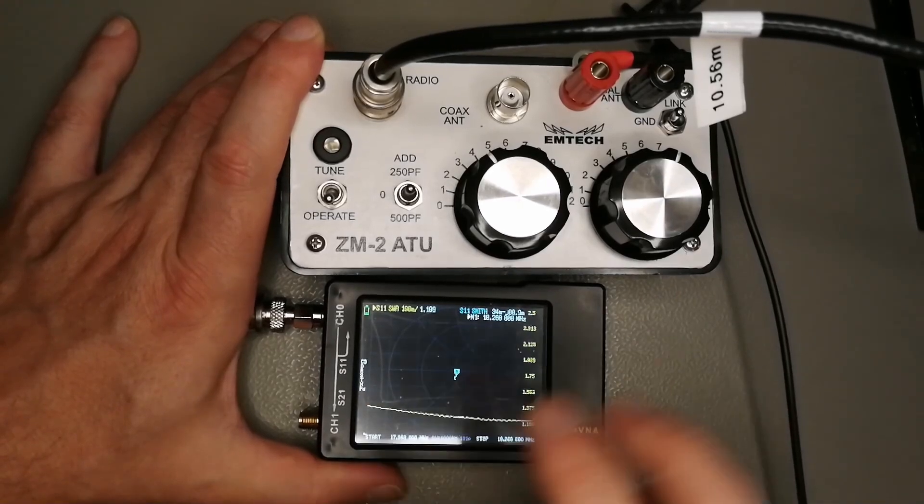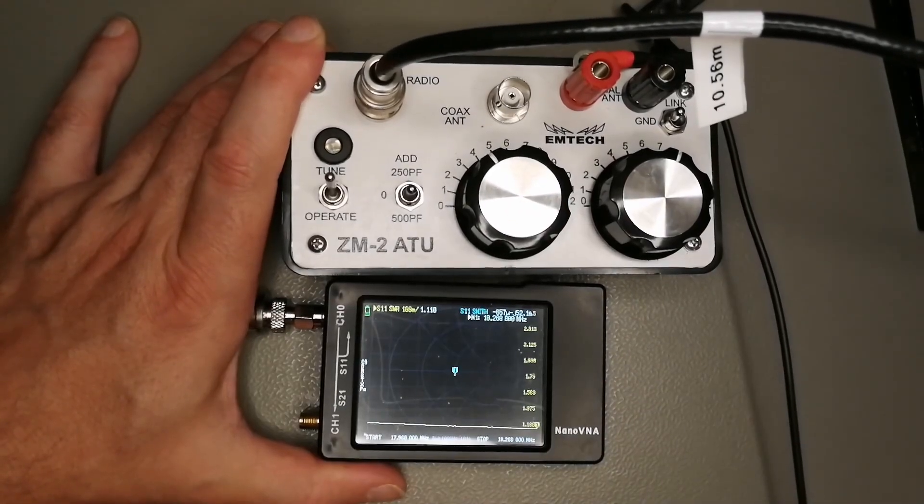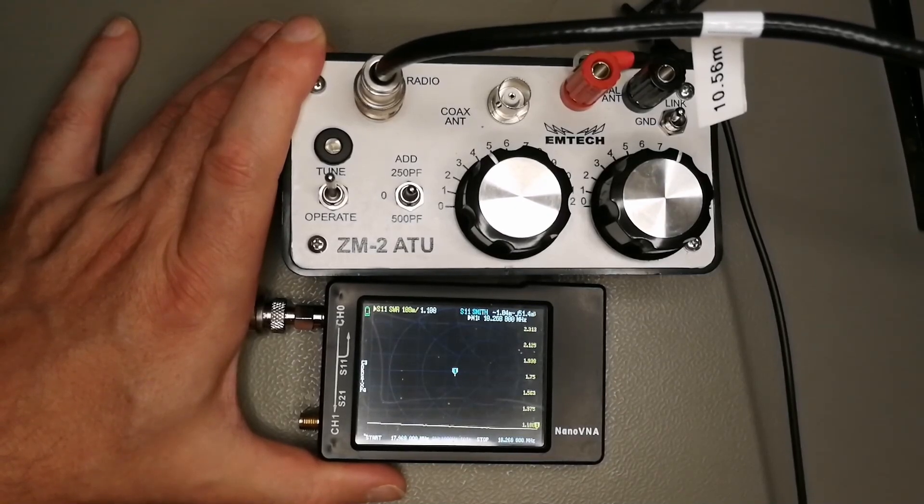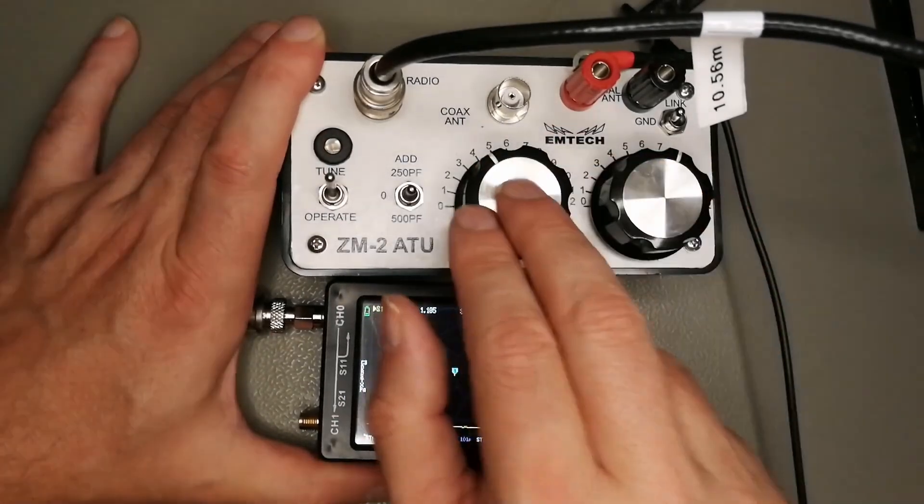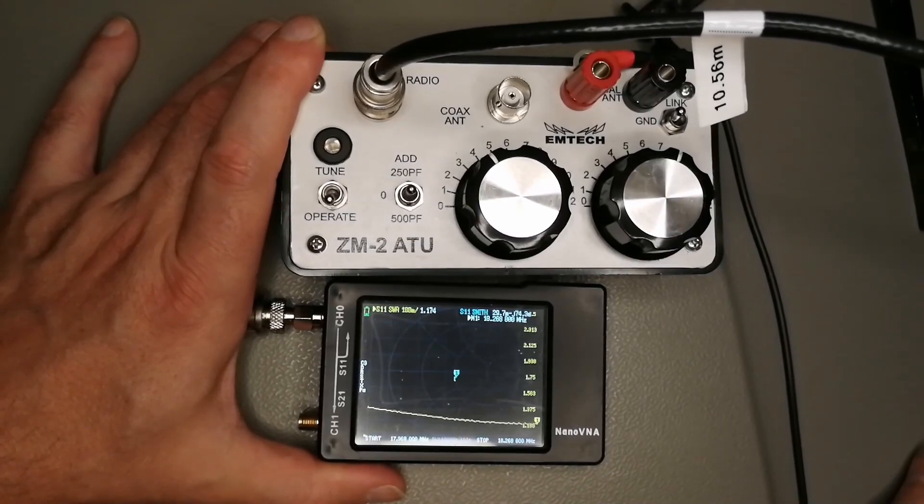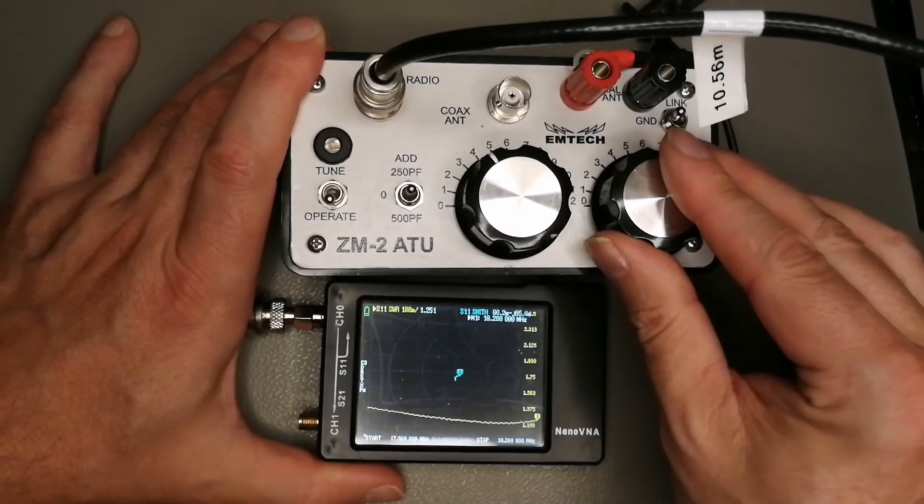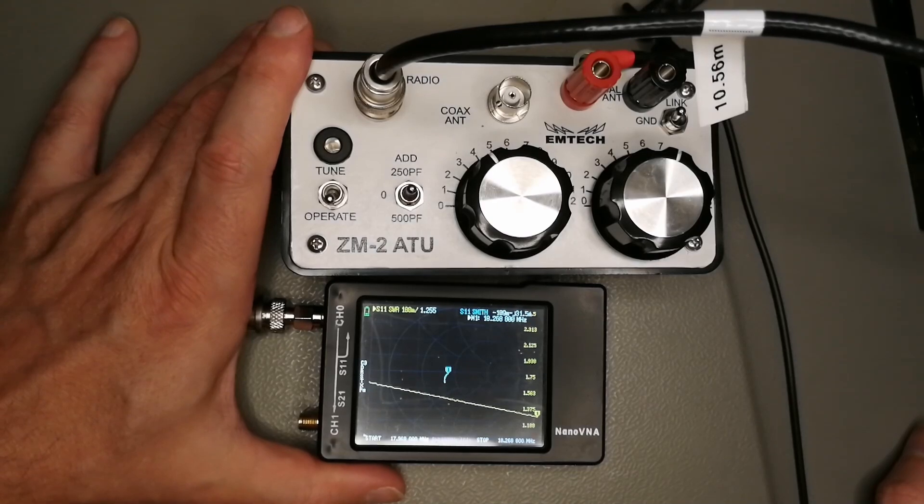Usually you would not use a nano VNA either. I think you tune to maximum noise first, similar to a magnetic loop. Then you flip the switch to the tune position. Transmit maybe a CW carrier on your HF radio. This is a QRP tuner, so maximum 15 watt. When you transmit, usually this LED should be on. You fiddle on the two knobs alternating until the LED goes off. Then you switch back to operate and you're ready to go. As you can see, I'm able to tune the whole band and get a very sharp dip on 40 meter.